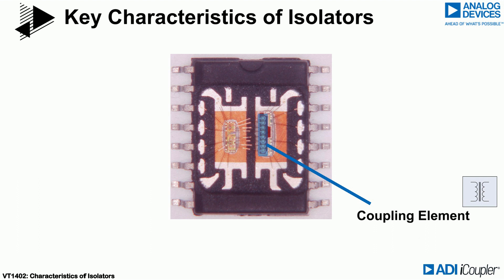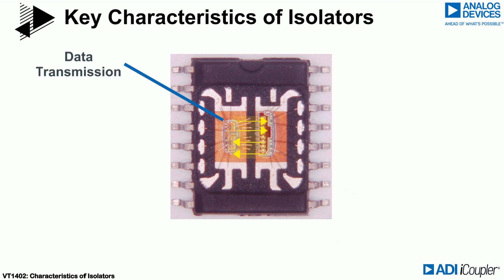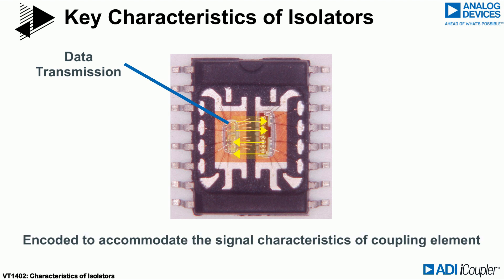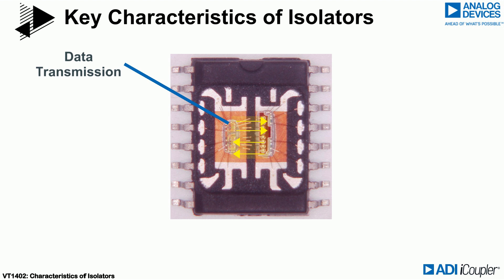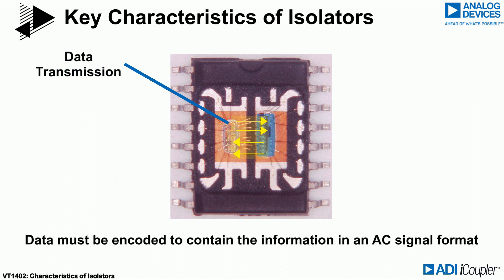The coupling element is the electrical device that transmits information or power across the insulation barrier. In the case of an I-coupler insulator, it's a microtransformer. Data is almost always encoded in some fashion to accommodate the signal characteristics of the coupling element. For example, transformers cannot pass a DC signal, so the data must be encoded to contain that information in an AC signal format.